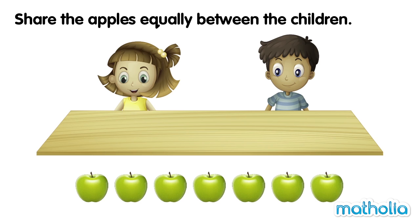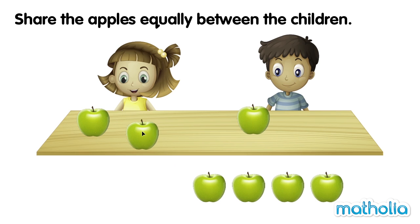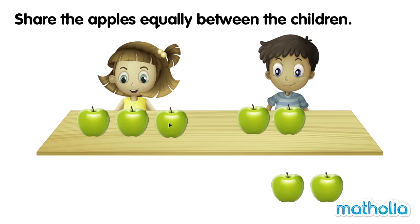Share the apples equally between the children. There are seven apples. The children have an equal number of apples — they each have three apples. There is one apple left. Seven divided by two is equal to three with one remainder.